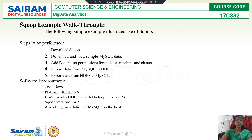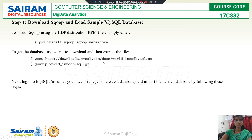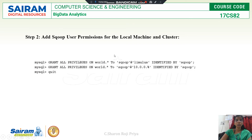The third step is to add Sqoop user permissions for the local machine and the cluster. Here, you are giving user permissions for the local machine and the cluster. When giving user permissions, there are three groups: user, group, and others. Grant all privileges on the world database — I am giving all privileges to public, both for the local machine and the cluster.